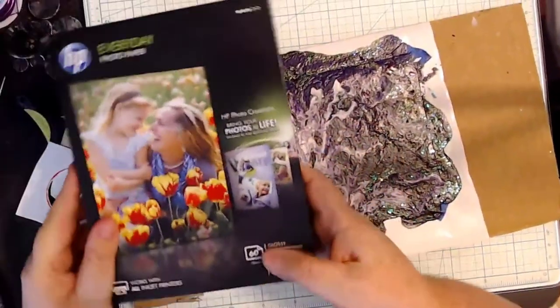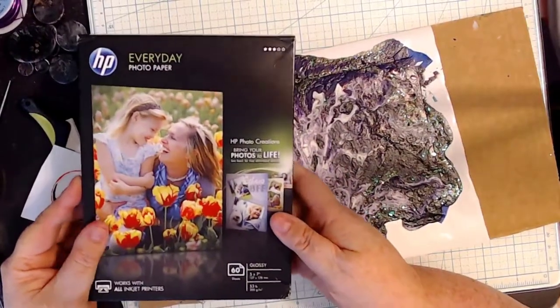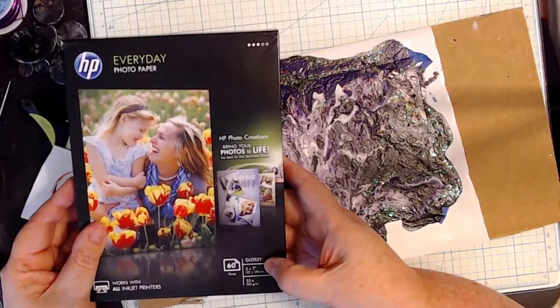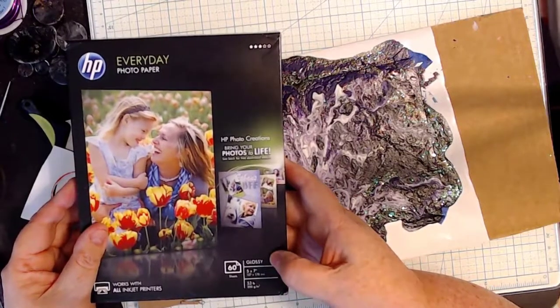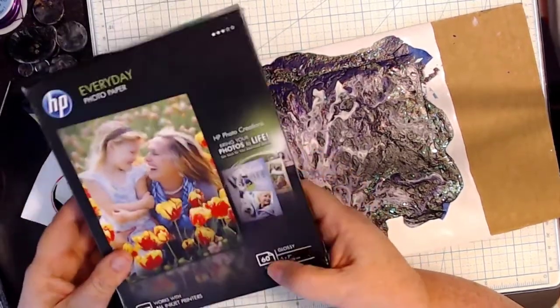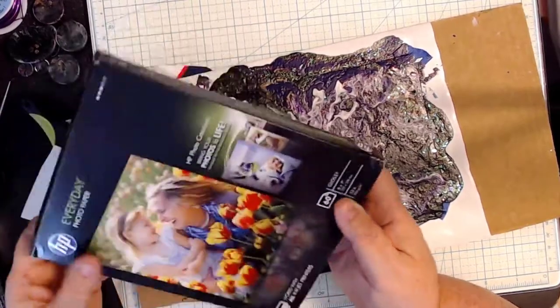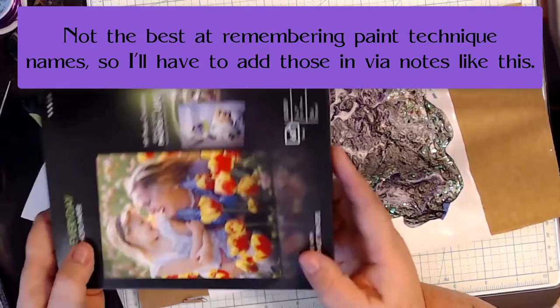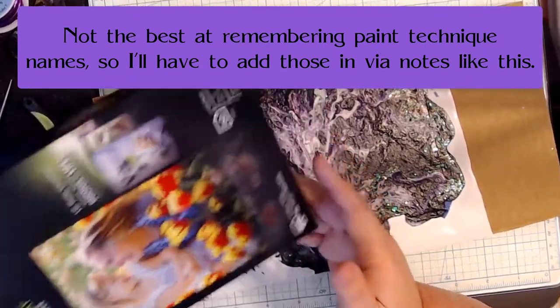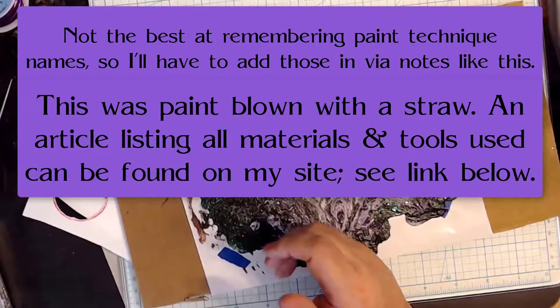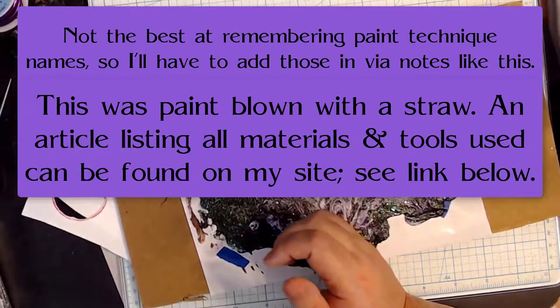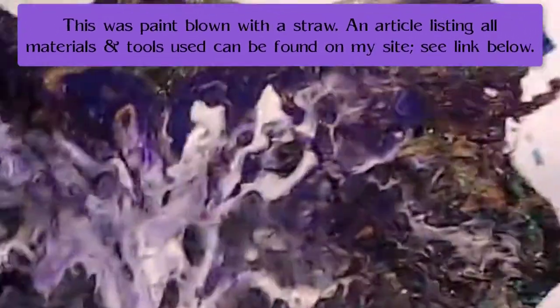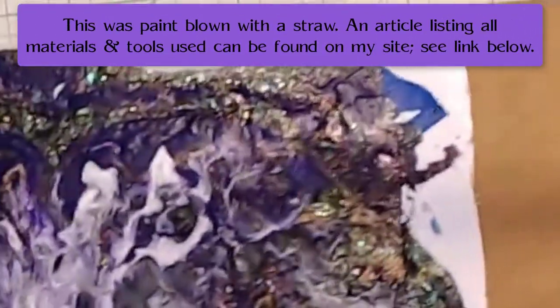I bought this package of photo papers, they're 5x7s, this one happens to be by HP but this is their everyday photo paper so it's a little bit cheaper than their premium grade but these are wonderful to do pours on because they don't buckle or ripple or anything like that when you put your paint on them.